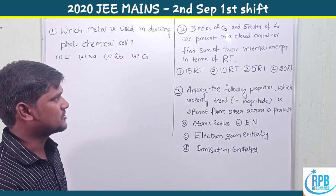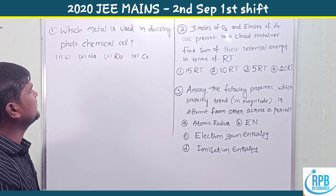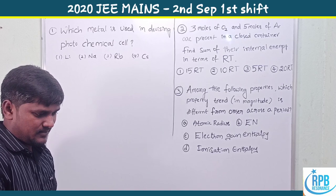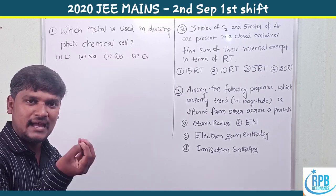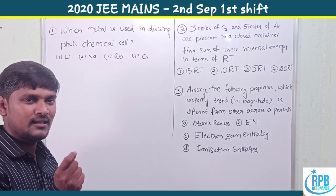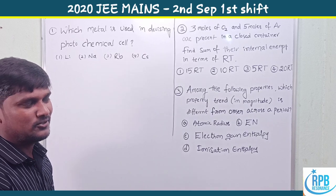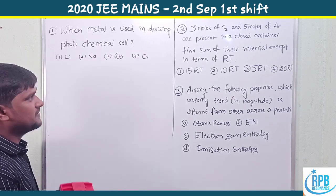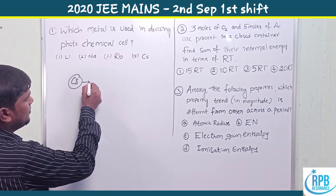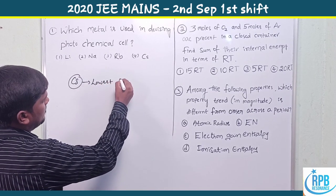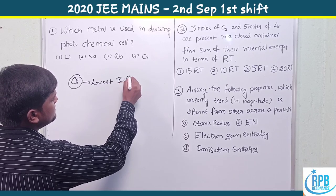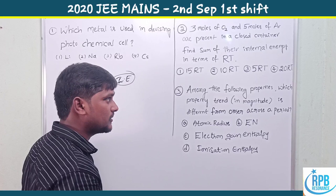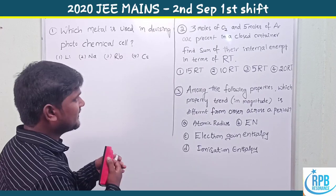Question 1: Which metal is used in devising the photochemical cell? Generally, the metal used in the photochemical cell is the one having the lowest ionization enthalpy. From top to bottom, ionization enthalpy decreases, so cesium has the lowest ionization enthalpy. That's why it is used in the photochemical cell.